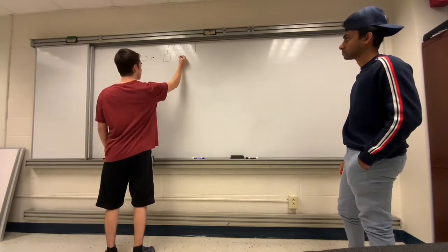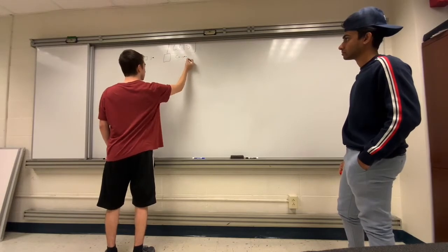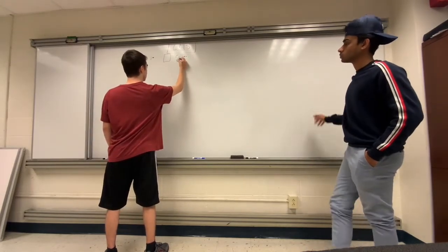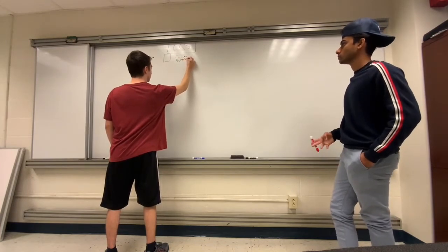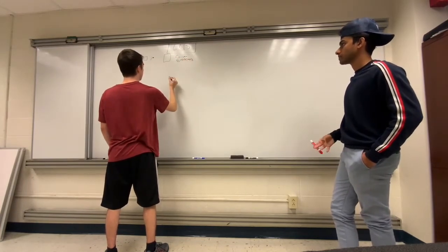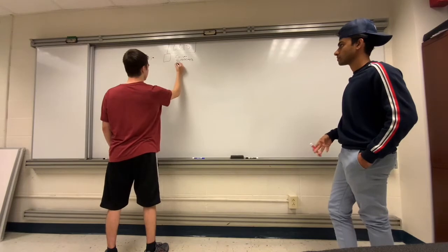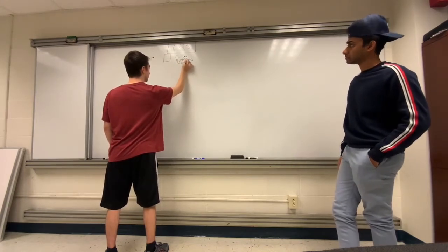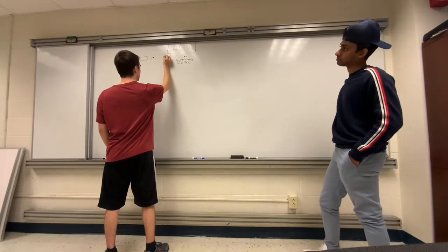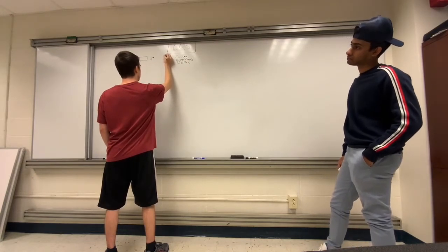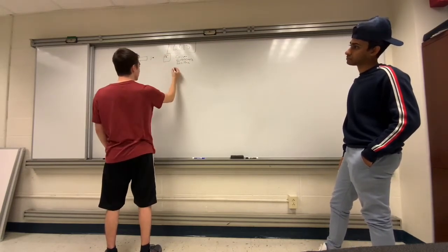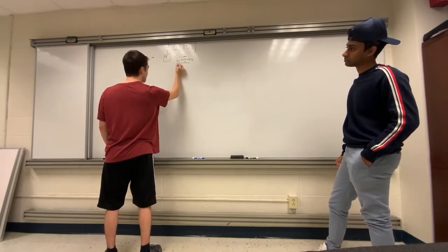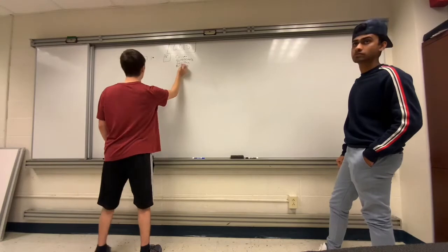What we are given with this problem is that the initial velocity of the bullet is 400 meters per second. Once it hits the wood, it travels a total of 11 centimeters into the wood, ending up about there. The length of the barrel, which I'll call b, is 60 centimeters, and that would be this right here.